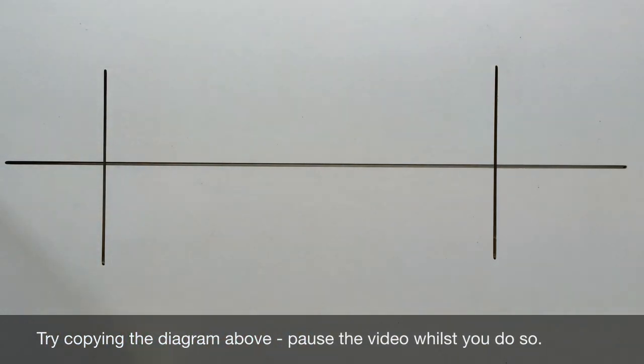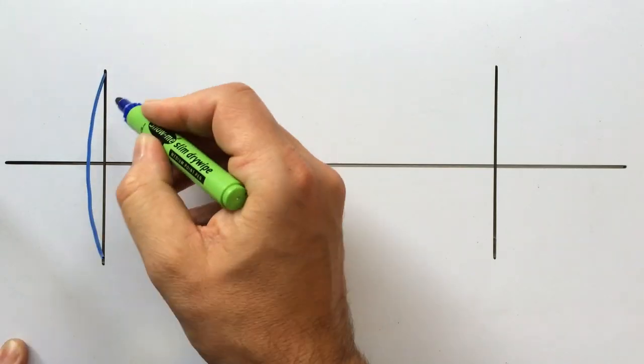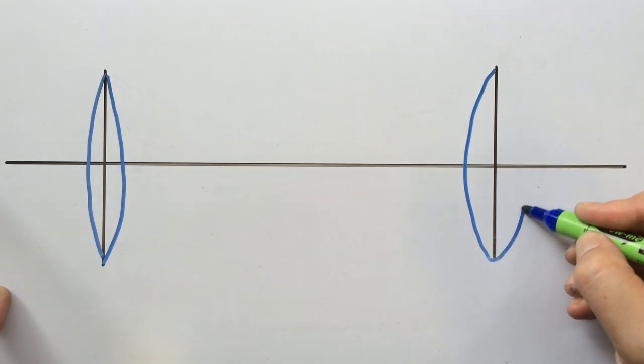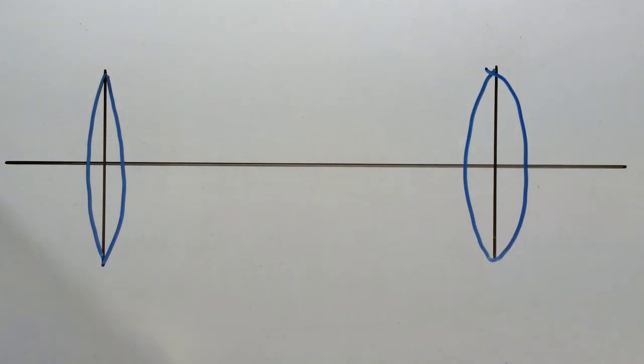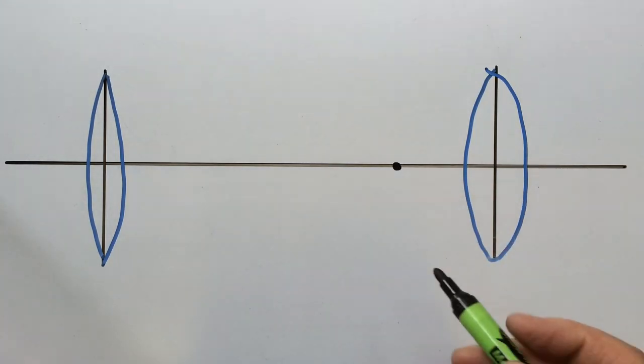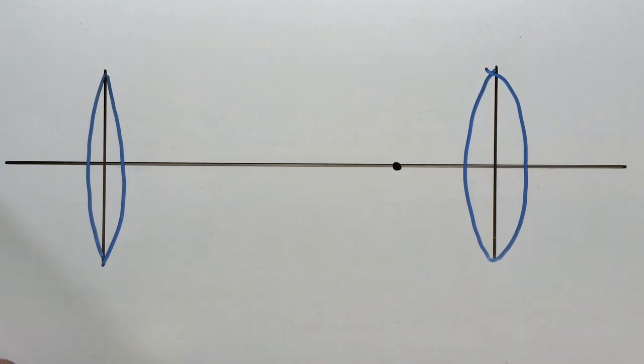You can also draw in the lenses if you wish, although you don't need these for the diagram. Once you've done this, draw a point on your principal axis to represent the focus. It is conventional with the astronomical telescope for the focus to be closer to the eyepiece than to the objective lens, which gives this telescope positive magnification.